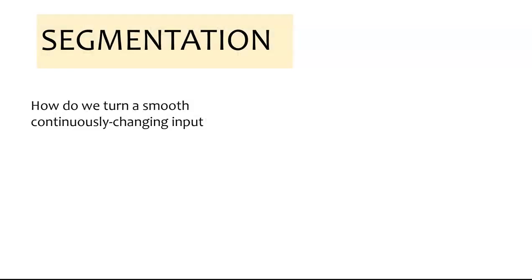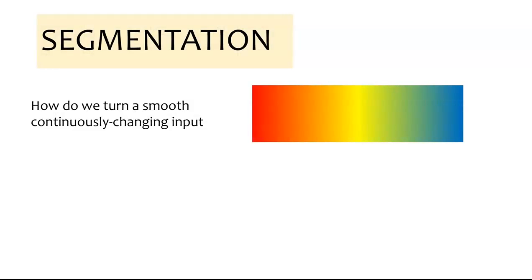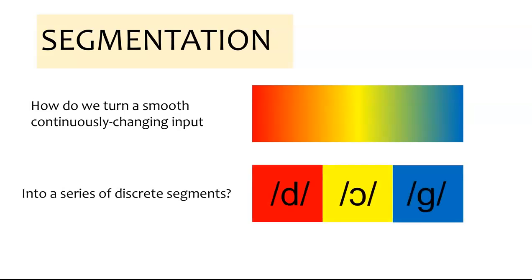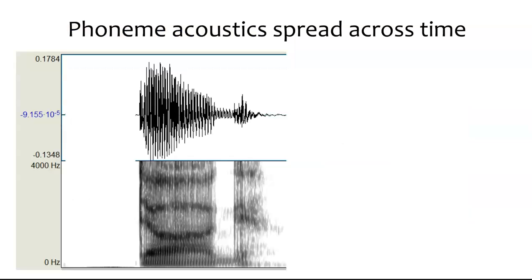Let's think about segmentation. The idea is that we take a smooth, continuously changing input and convert it into a series of discrete segments. For example, if we think about the waveform for 'dog', we know that ultimately we can break this down into a 'd', 'aw', and 'g' — but how do we do that from the acoustics? As it turns out, the acoustics are pretty difficult to define.